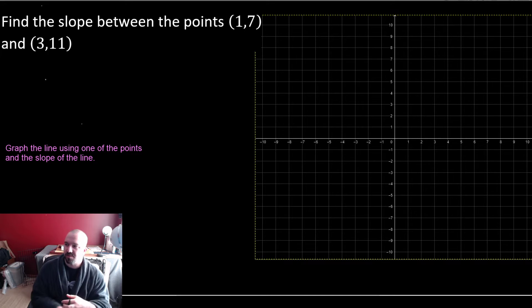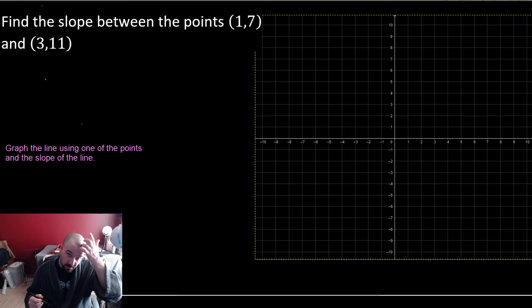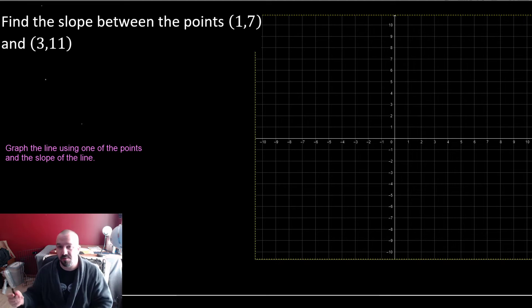Step one, find the slope between the points (1,7) and (3,11), and then after that, we're going to graph the line, but instead of using points to graph the line, we're going to graph them using the slope intercept form.